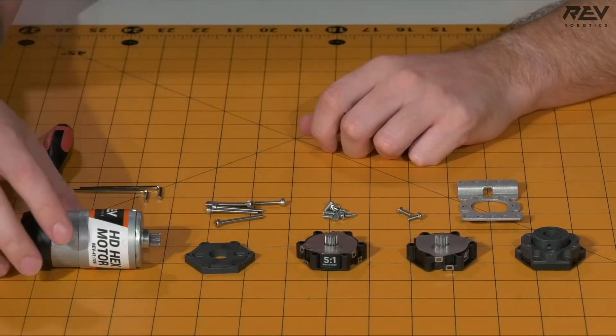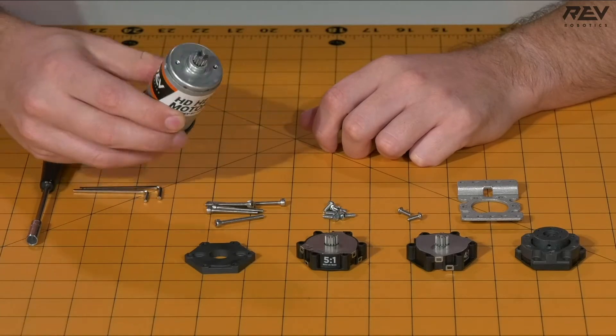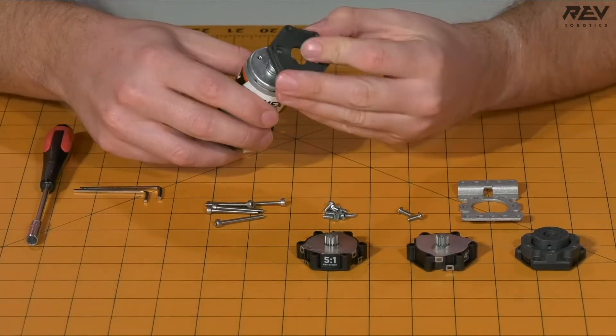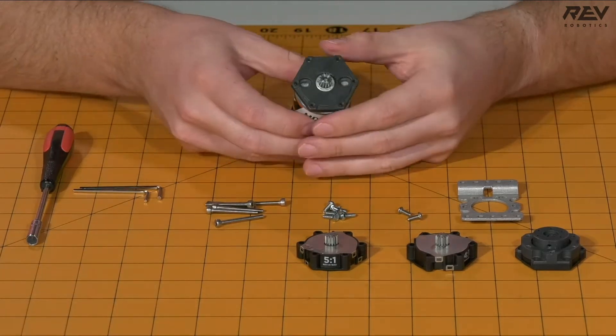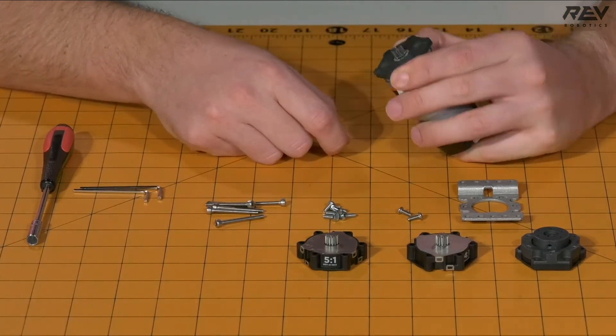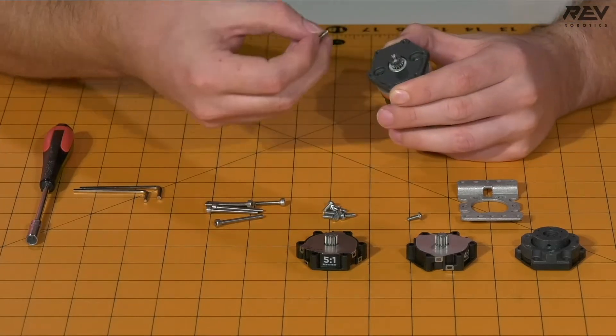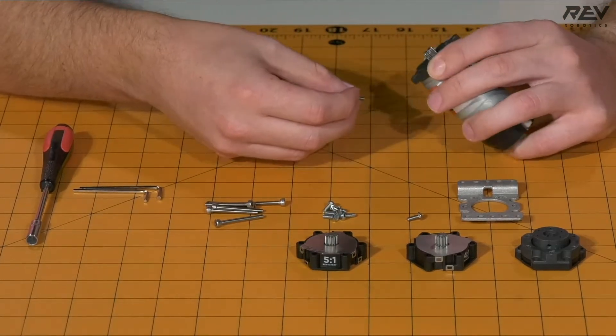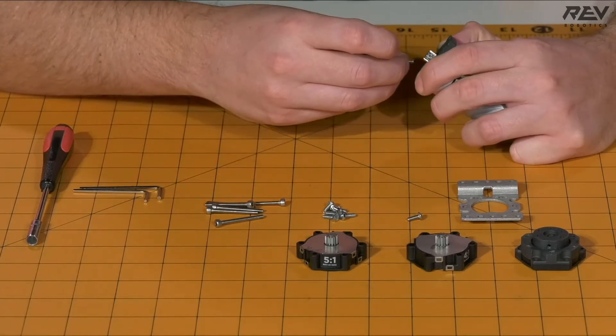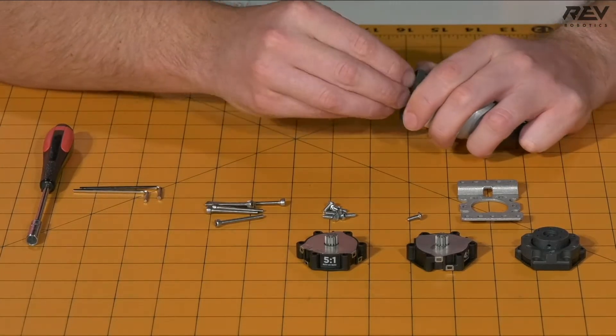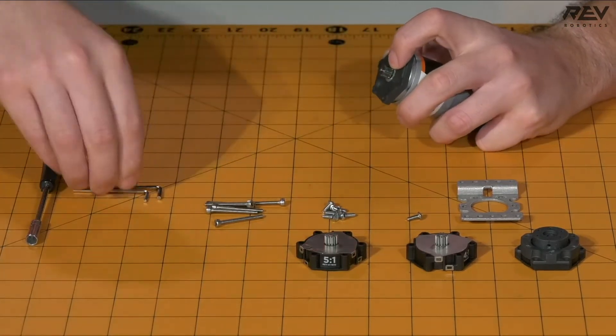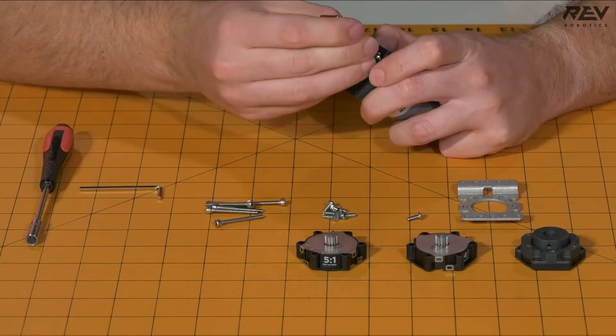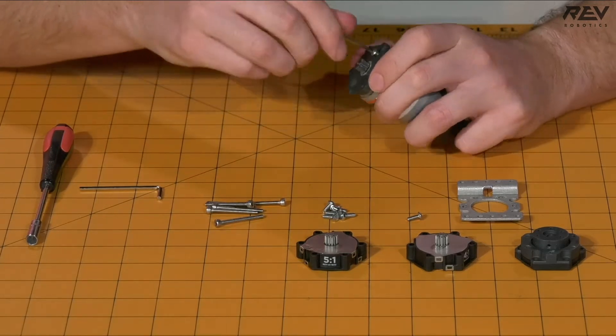To get this started, you will need to take your HD hex motor with the pinion pre-pressed on, as well as your mounting plate, and put that onto the motor. The next step is to take the button head screws, and you're going to want to attach the mounting plate to the motor itself. For this step to get the button head screws in, you will need to use the 2mm Allen wrench.